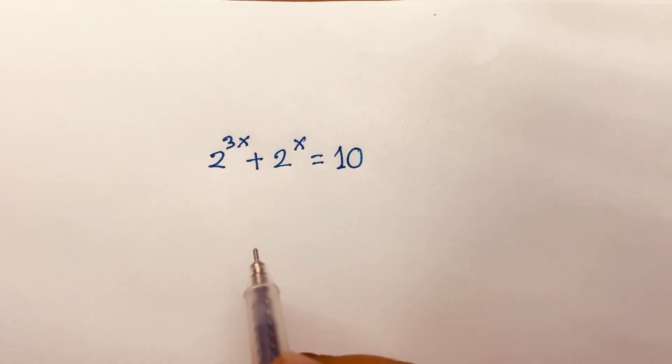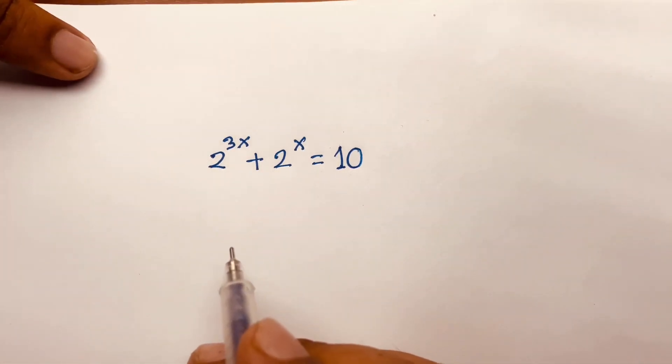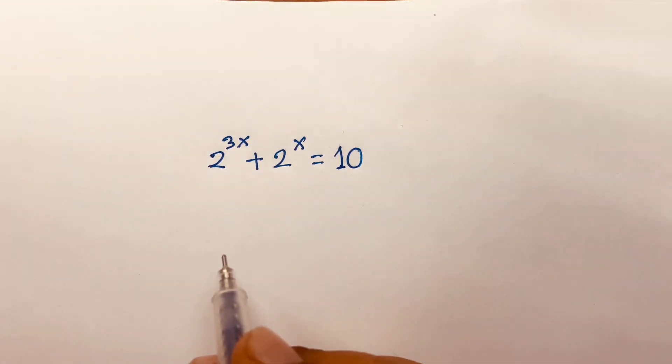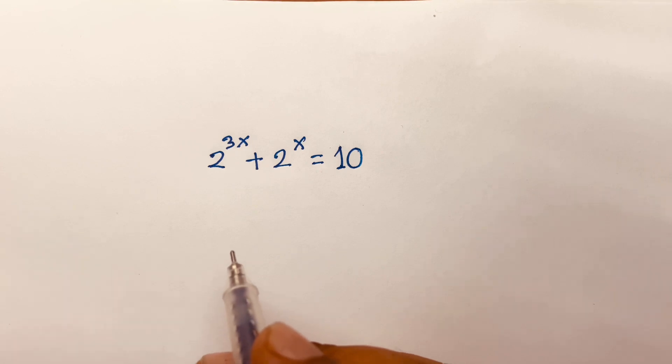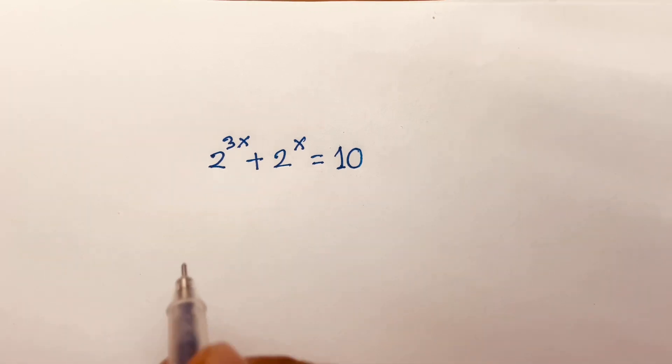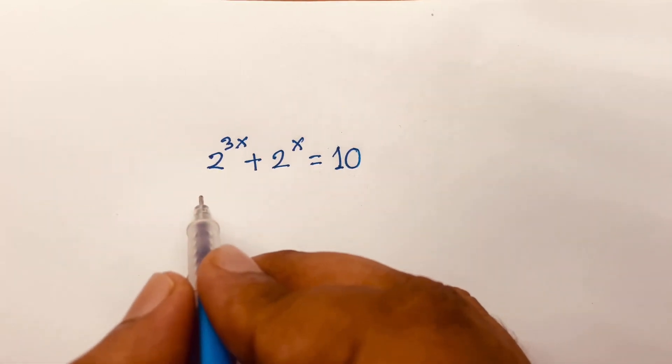How to solve this exponential equation: 2 to the power 3x plus 2 to the power x is equal to 10. We are finding out what is the value of x. This is a math Olympiad question.